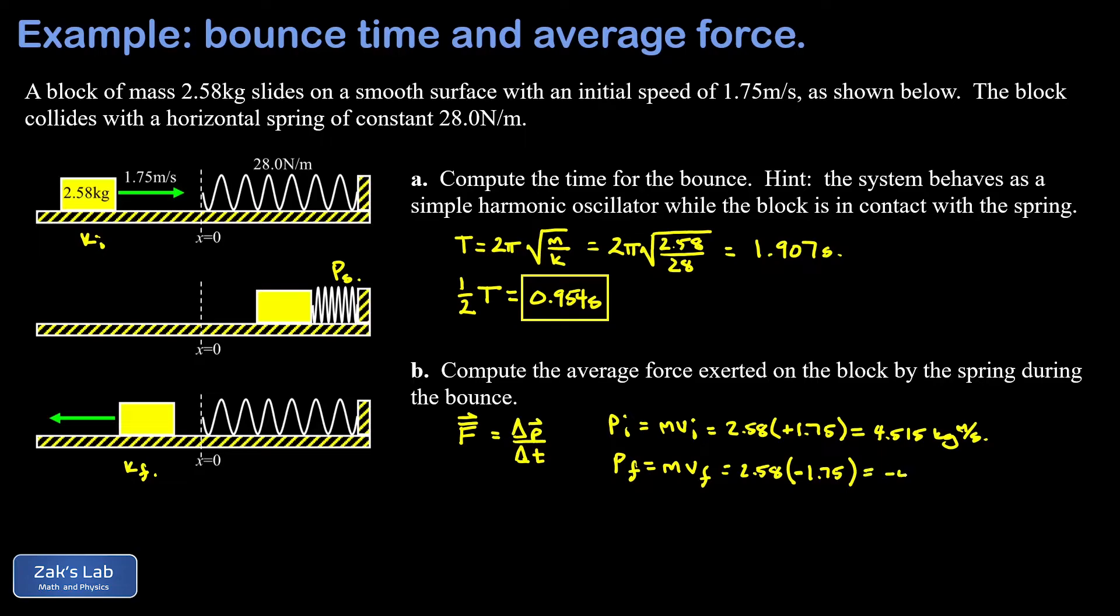So when we plug into our average force formula, I have Δp or p_final minus p_initial: that's negative 4.515 minus another 4.515 divided by the time for the bounce which we computed in part A, and that's 0.954 seconds.